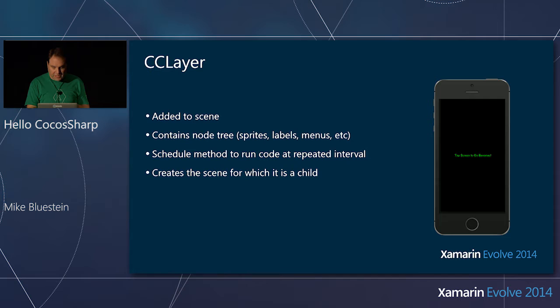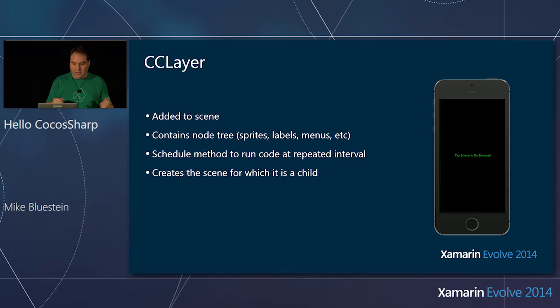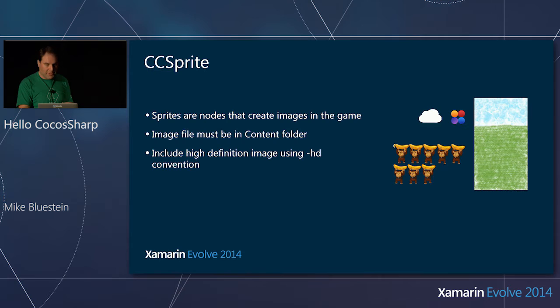Now I've got the scene and the layer, but I still don't have anything really in the game — just a blank screen. I want to put things on the screen. The characters and images you use are sprites. A sprite is a class that abstracts a texture. Everything's happening on the GPU, and you can't have a compressed image go to the GPU, so it manages the uncompressed image — the texture that gets rendered off the GPU — and can be moved independently.